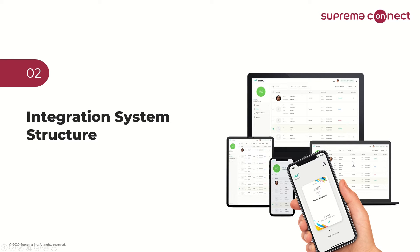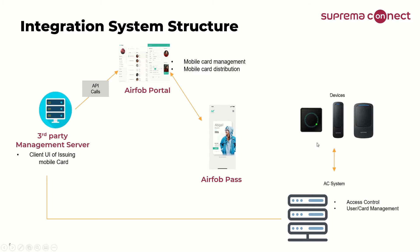Part 2: Integration System Structure. The third-party system can issue L4Path by calling the API through L4Portal, and you can manage mobile card issuance from a combined client program. Configurations and registering devices are equally required to make it happen. In other words, the setup of the mobile card should be configured by opening the L4Portal site and activating the license. After that, the administrator can call the API to issue and manage mobile cards from the third-party program.